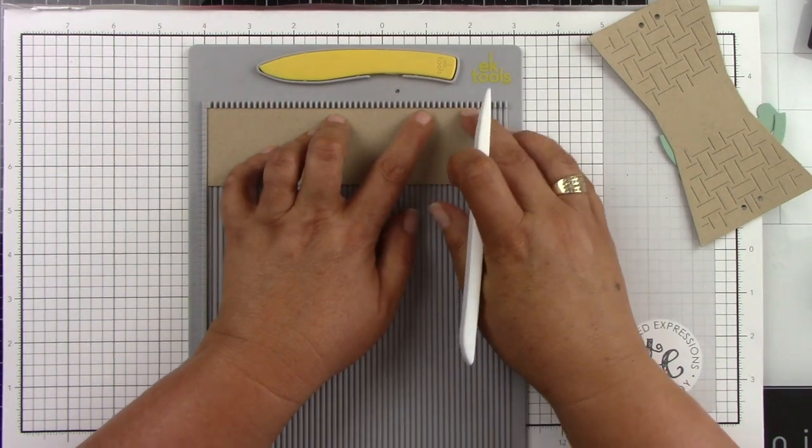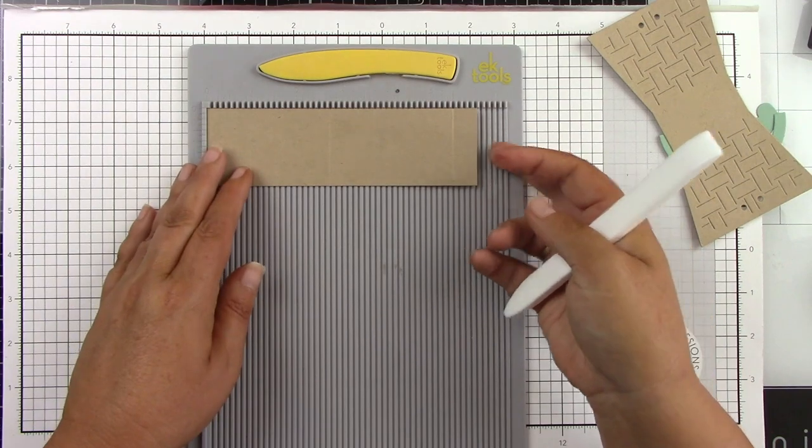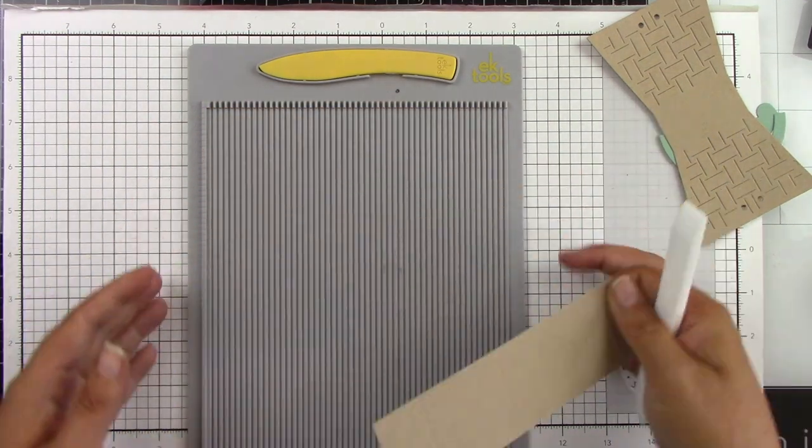So again, 1 inch, 2 and 3 quarters, 3 and 3 quarters, and 5 and 3 quarters. And again, this measures 6 inches by 1 and 3 quarters of an inch.